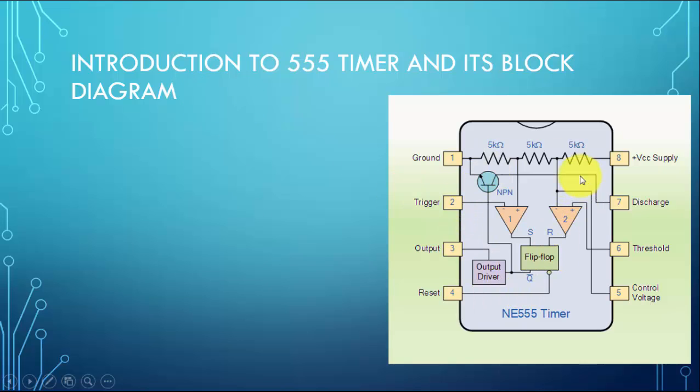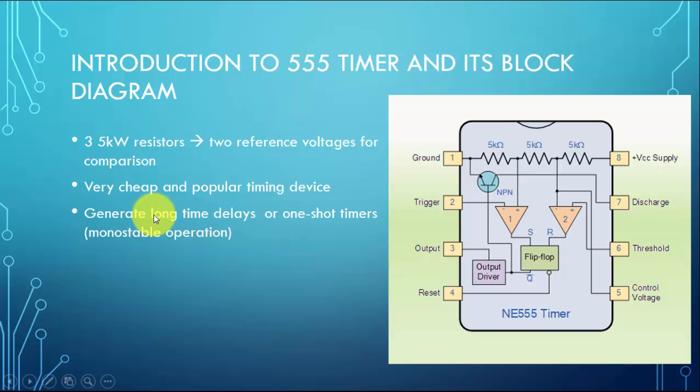We're not going to go into the details here, but the 555 comes from these three 5-kilohm resistors that help generate two reference points for comparisons. This is an 8-pin integrated circuit and it's a very cheap and popular timing device.